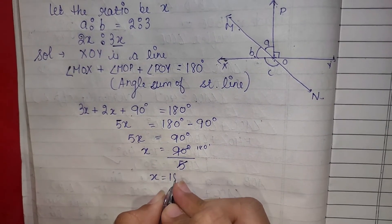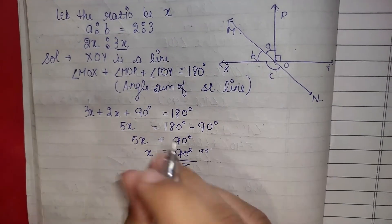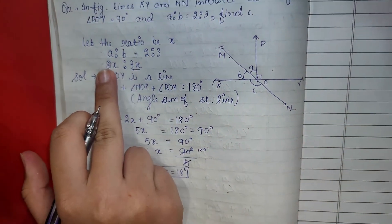So x is equals to 18. अब हमारे पास x की value आ गई तो हमें a, b की value निकालनी है।